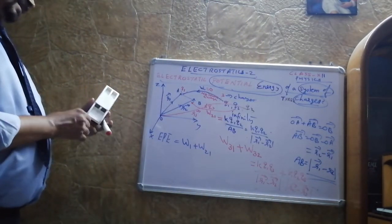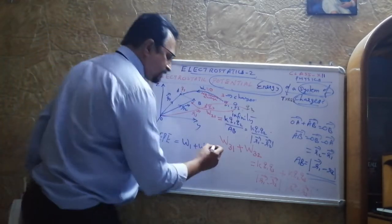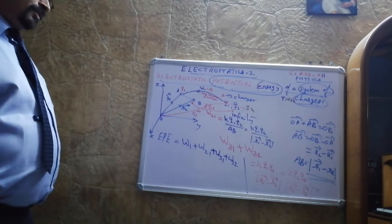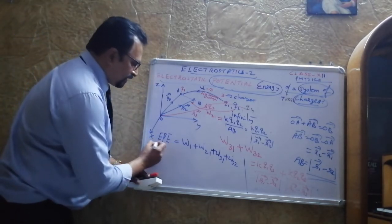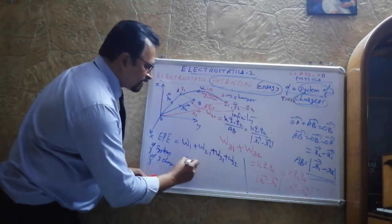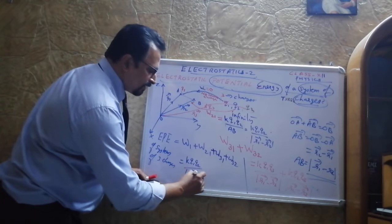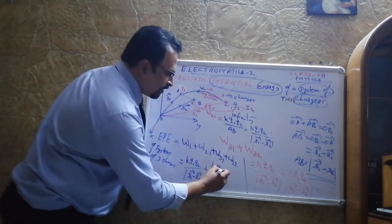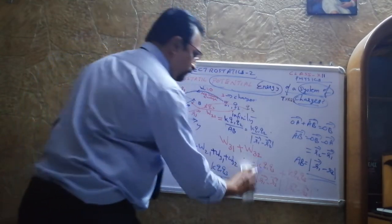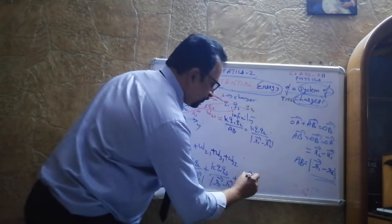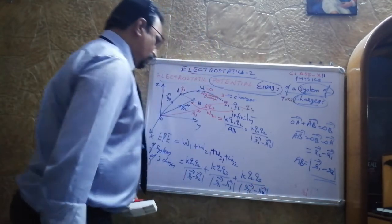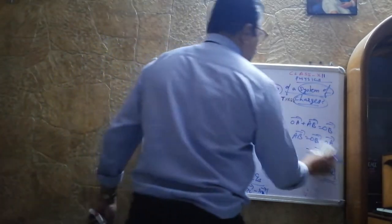Now take the sum of all the work done: W₁ + W₂₁ + W₃₁ + W₃₂. Adding them all together gives the electrostatic potential energy of the system of three charges: kq₁q₂/|r₁−r₂| + kq₁q₃/|r₁−r₃| + kq₂q₃/|r₂−r₃|.